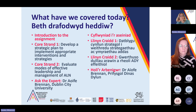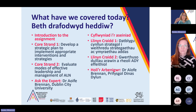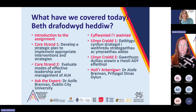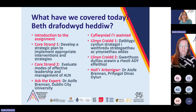Di and Alison went through the three tiers of intervention: the first tier being at the classroom level, then tier two which is more bespoke, and then tier three where you might be bringing outside agencies in or withdrawing the child out of the main classroom settings. And then Core Strand 4 is what Anne has just been discussing around evaluating modes of effective leadership and management of ALN and what that looks like in practice.